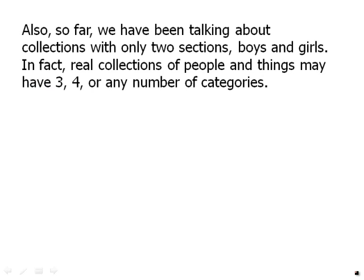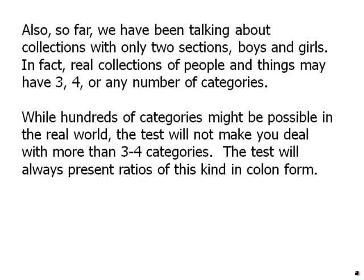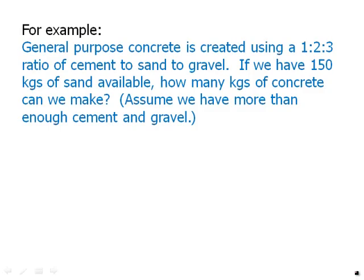Also so far we have been talking about collections with only 2 sections, boys and girls. In fact, real collections of people and things may have 3, 4 or any number of categories. While hundreds of categories might be possible in the real world, the test will not make you deal with more than 3 or 4 categories. The test will always present ratios of this kind in colon form. For example, general purpose concrete is created using a 1 to 2 to 3 ratio of cement to sand to gravel. If we have 150 kilograms of sand available, how many kilograms of concrete can we make? Assume we have more than enough cement and gravel.